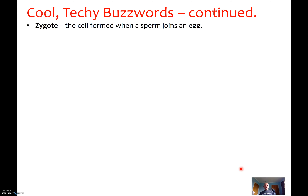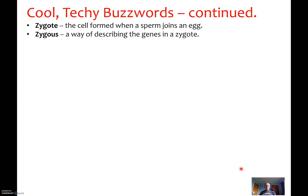Zygote — cool word — the cell formed when a sperm joins an egg. When my dad's sperm and my mum's egg met, that's what made me. There is all the genetic information that made me.